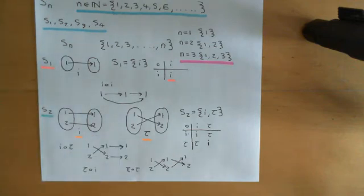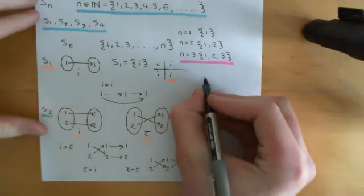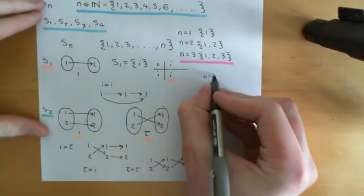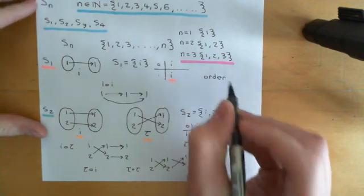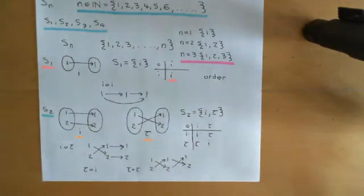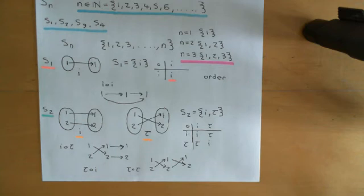There is a special piece of terminology that people use for the size of a group, and that's the order of a group. So when people talk about the order of a group, that just means how many elements the group has. Of course, this presumes that the group is a finite group, which all of these S_n groups are going to be.